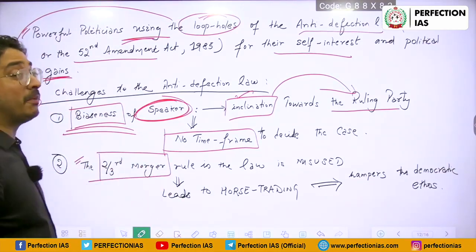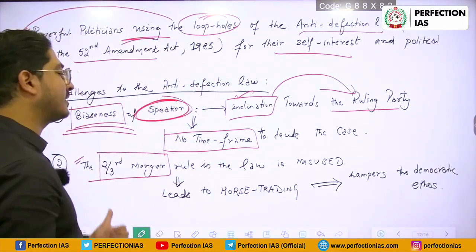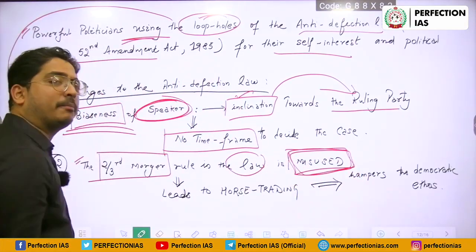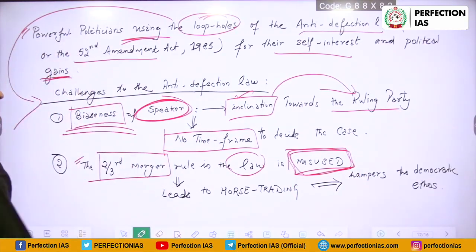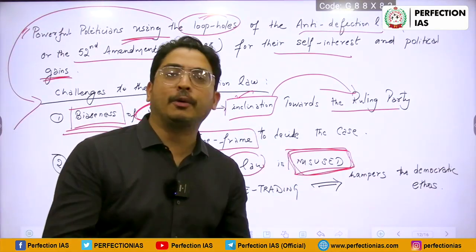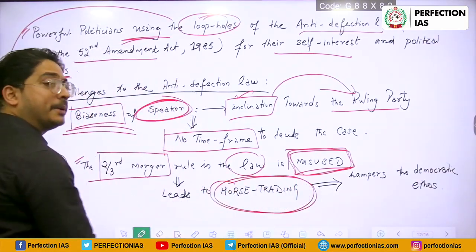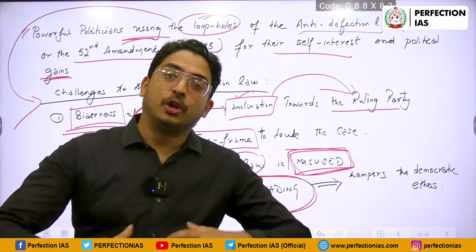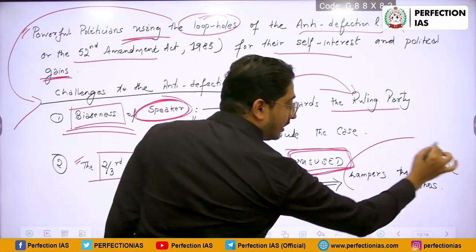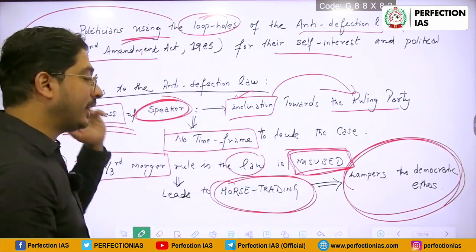Second important point: the two-thirds merger provision. If two-thirds of members merge, it is not considered defection. This provision is being misused the most — as seen in Maharashtra as well. This two-thirds merger promotes horse trading; parties start buying MPs and MLAs. It hampers the democratic ethos of our country and is against democracy.